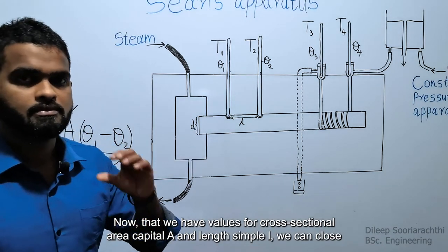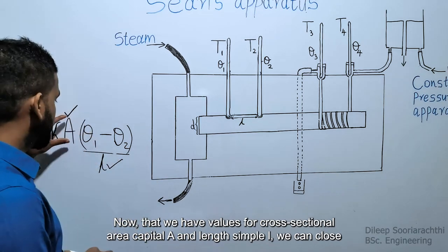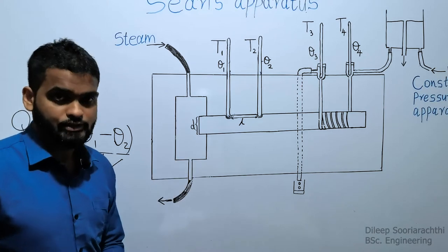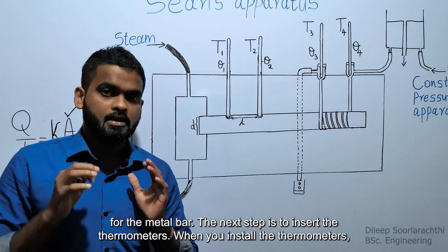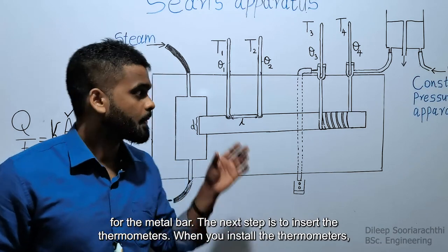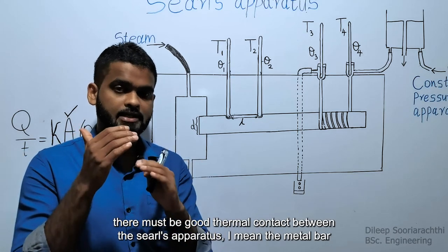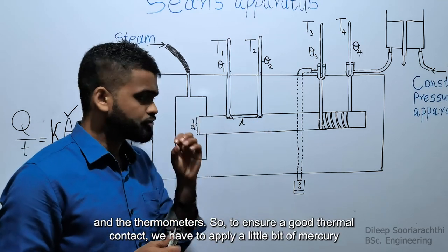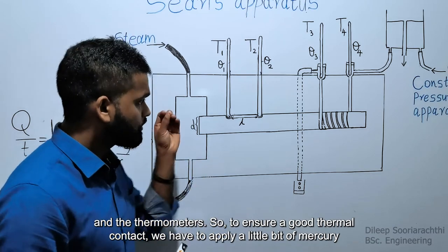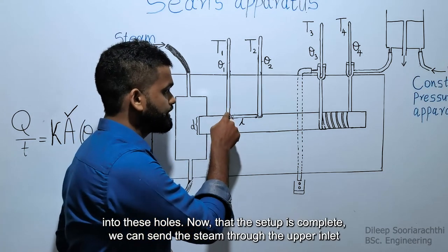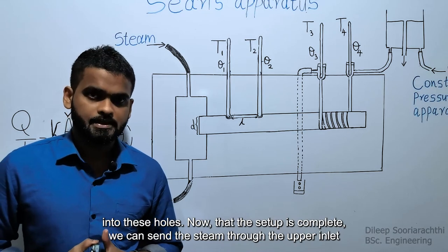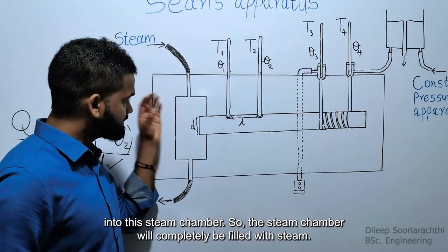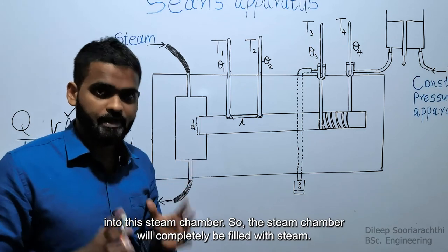Now that we have values for the cross-sectional area capital A and length simple L, we can close the wooden box to provide heat insulation for the metal bar. The next step is to insert the thermometers. When inserting the thermometers, there must be good thermal contact between the metal bar and the thermometers. To ensure good thermal contact, we apply a little bit of mercury into these holes. Now that the setup is complete, we can send steam through the upper inlet into the steam chamber, so the steam chamber will be completely filled with steam.